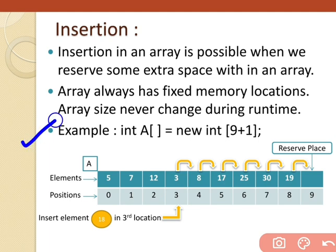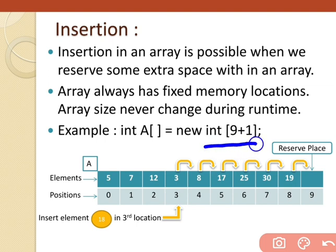I declared an array of size n, but for reserving one extra place I'm adding one — I've written nine plus one to show that I'm adding one reserved place. The second point: an array always has a fixed memory location and the array size never changes during runtime. That's why when declaring the array, we reserve one extra space for insertion.